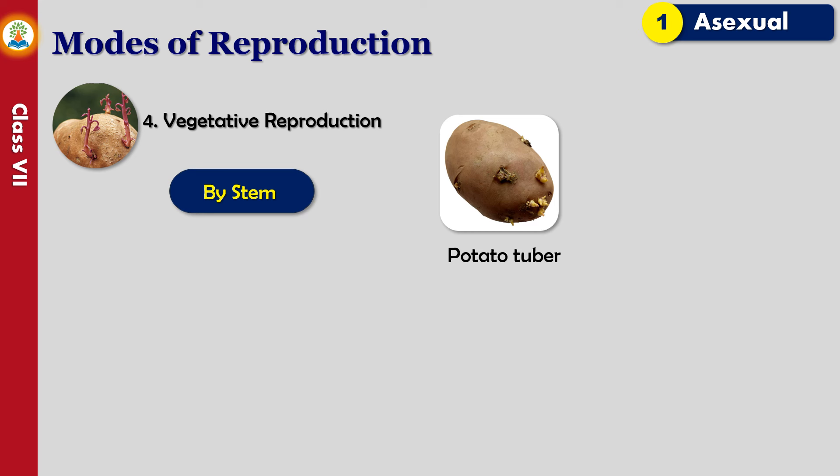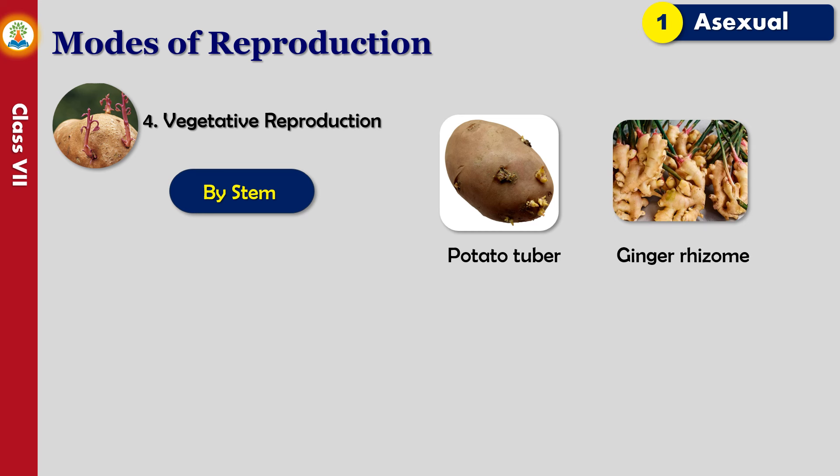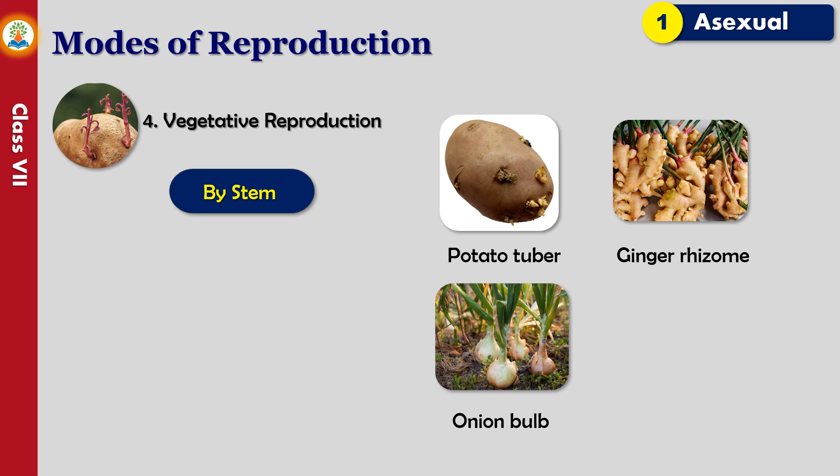A rhizome is an underground stem with scaly leaves, buds, and roots. Ginger and turmeric are examples of such plants. Onion is a type of modified shoot. It has a bulb with thick succulent leaves. Such bulbs are capable of producing new bulbs with the help of buds.